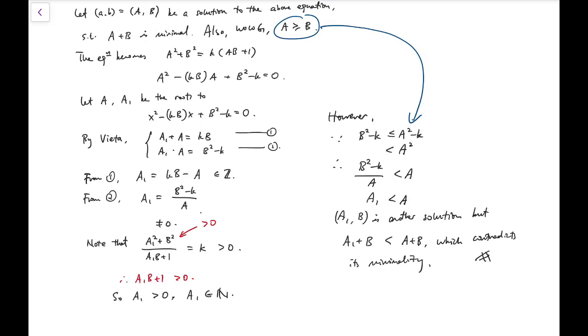And this contradiction only arises because we've assumed that k cannot be a perfect square. So therefore, a squared plus b squared over ab plus 1 must be a perfect square. So yay, we are done!